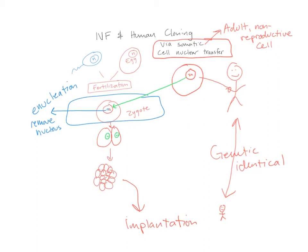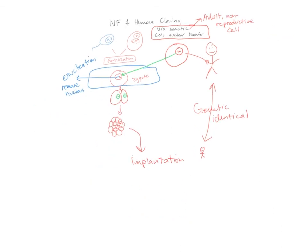What comes out after birth is a baby — not an adult, but genetically identical to the somatic cell donor. That's how reproductive cloning using somatic cell nuclear transfer would work. It hasn't been done in humans. The question is: should it? Hopefully that's a question you can think about and we can discuss on the discussion board.